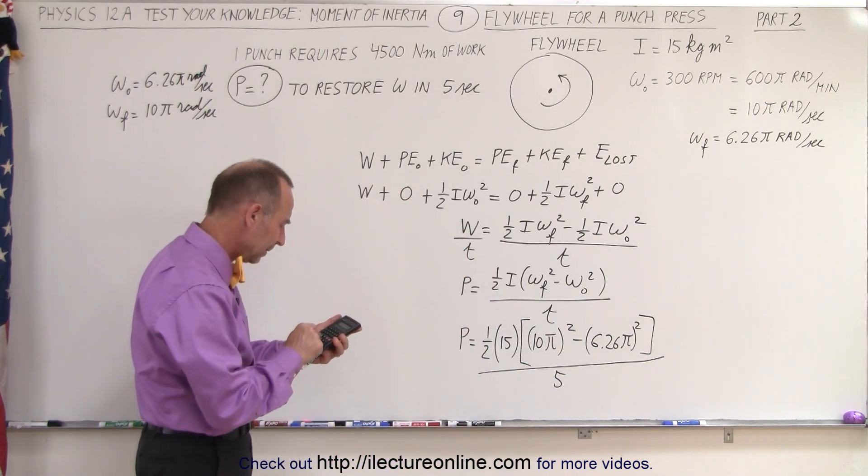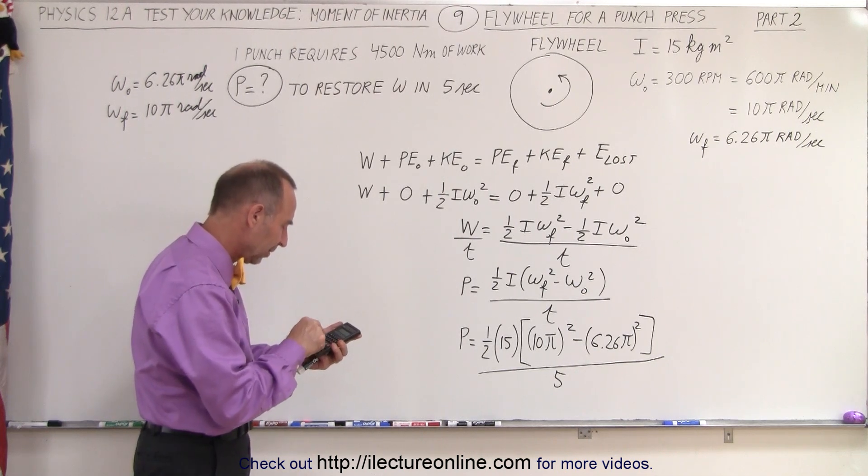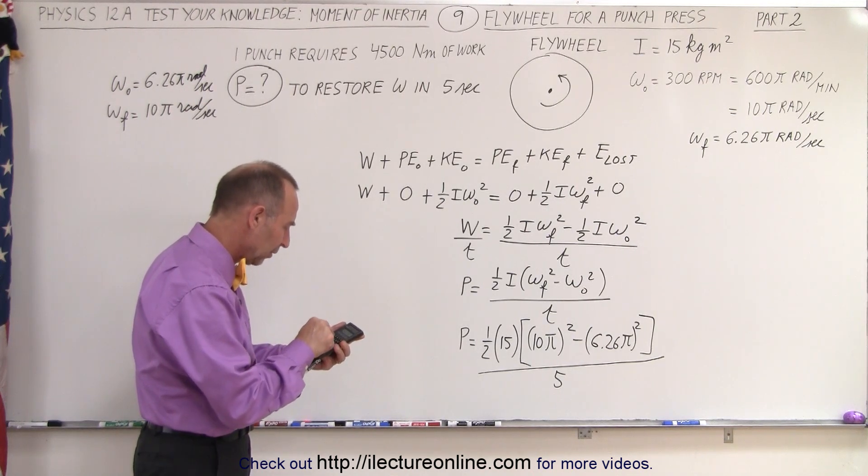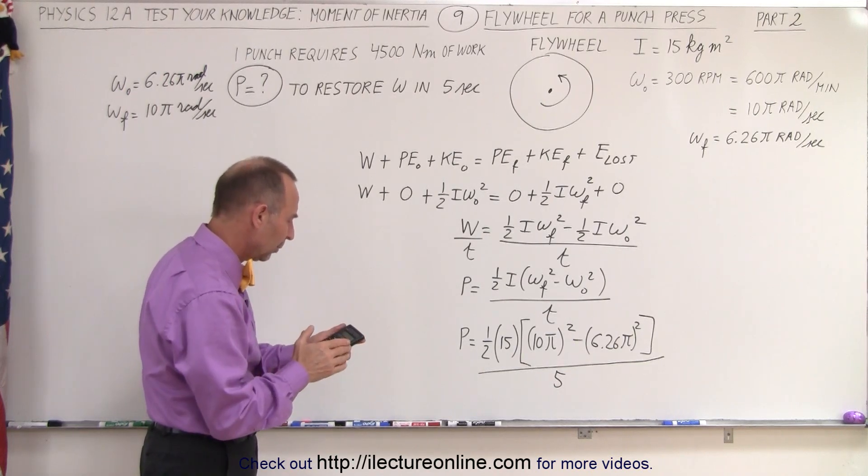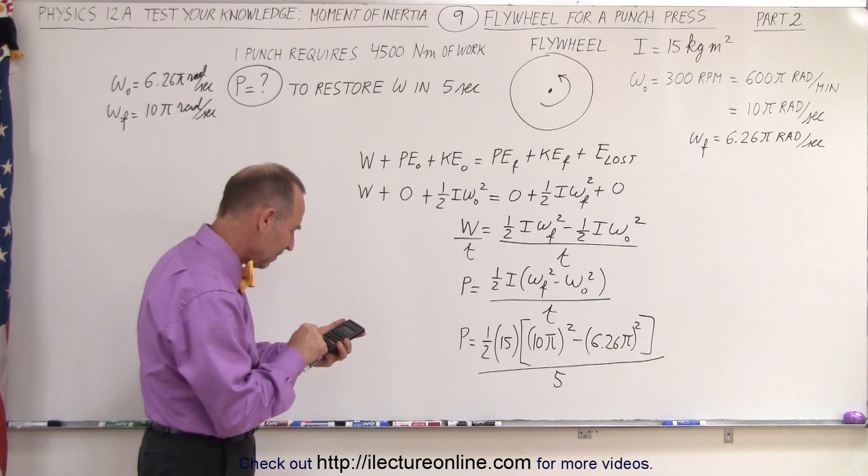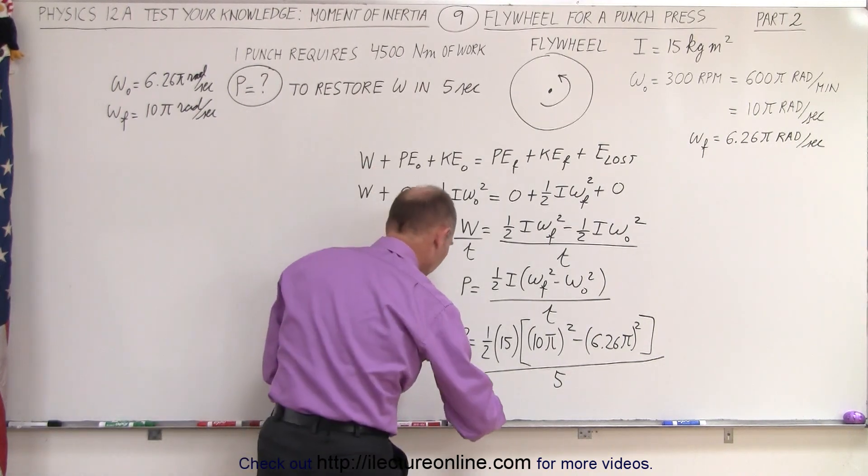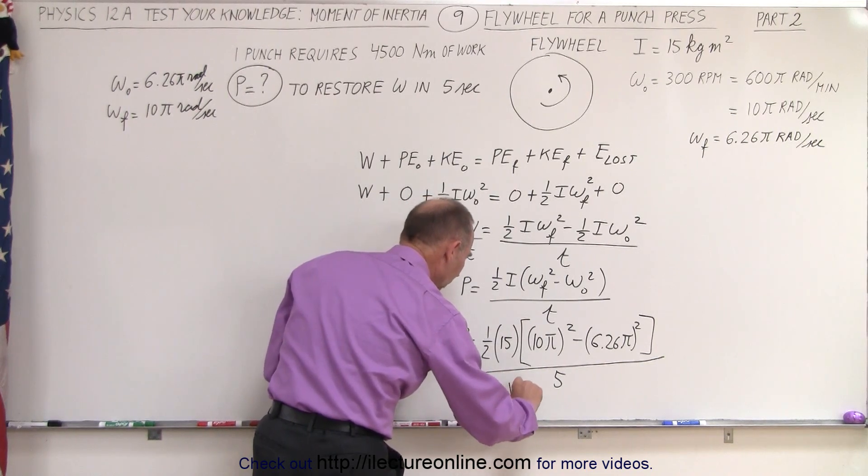10 times pi, we're going to square that, minus 6.26 times pi, square that, and equals—so that's the difference, which is basically 600. Then we're going to multiply that times 15, divide by 2, and divide by 5, and that gives us power equals 900, and of course that would be watts.